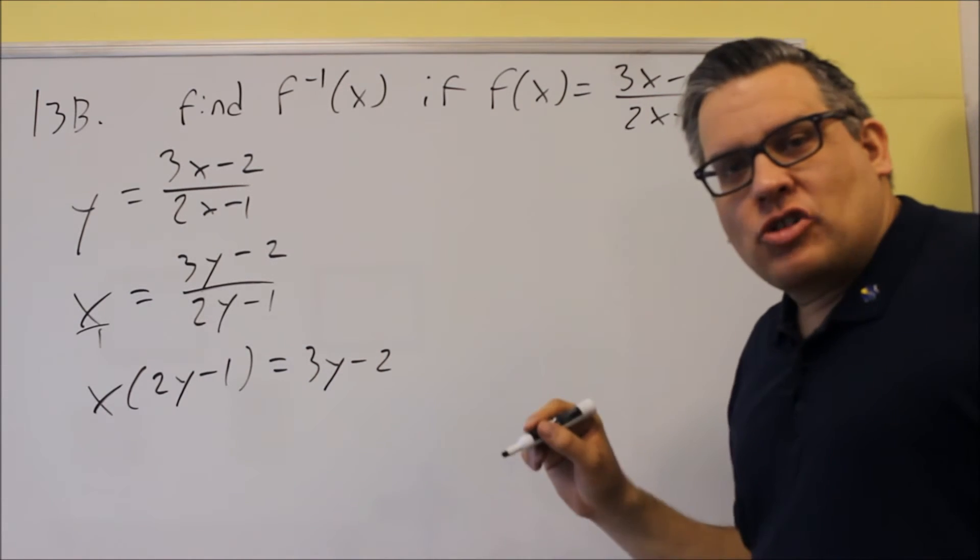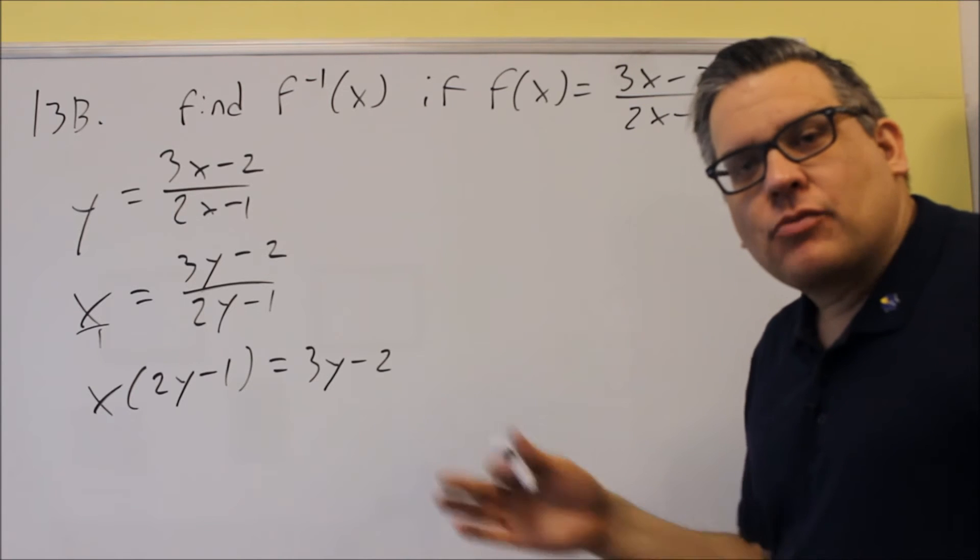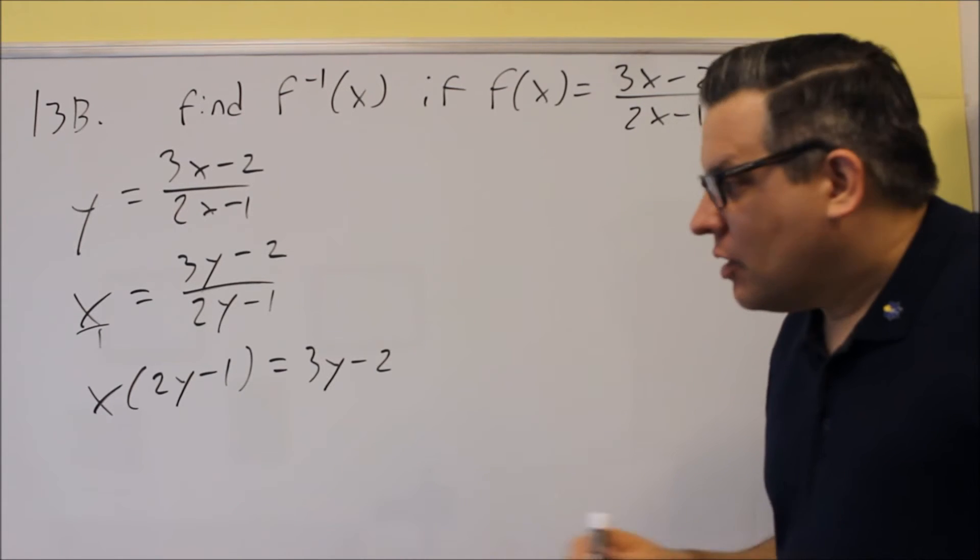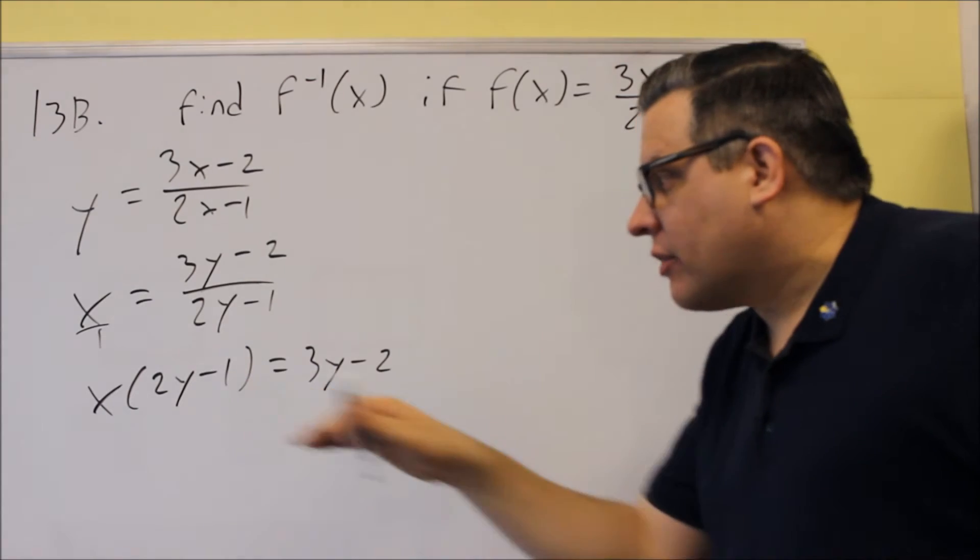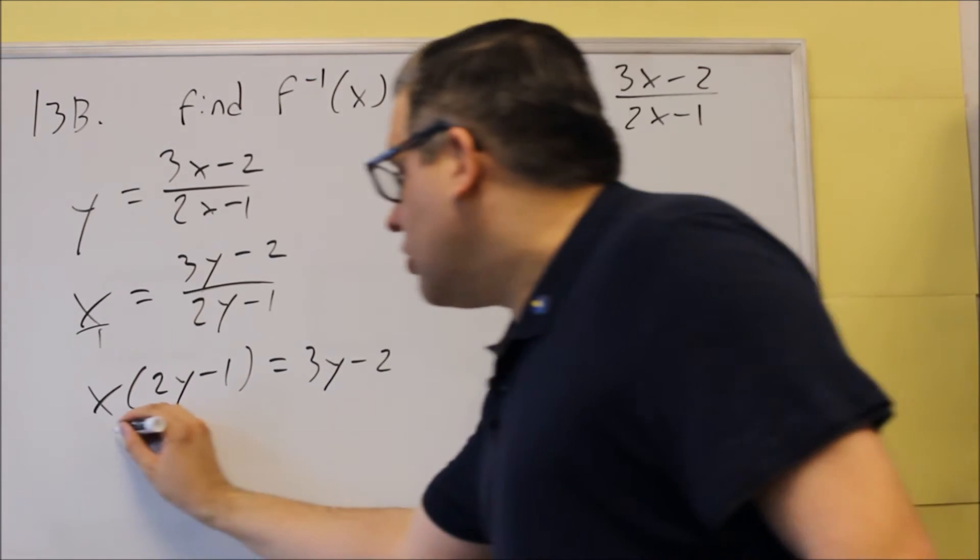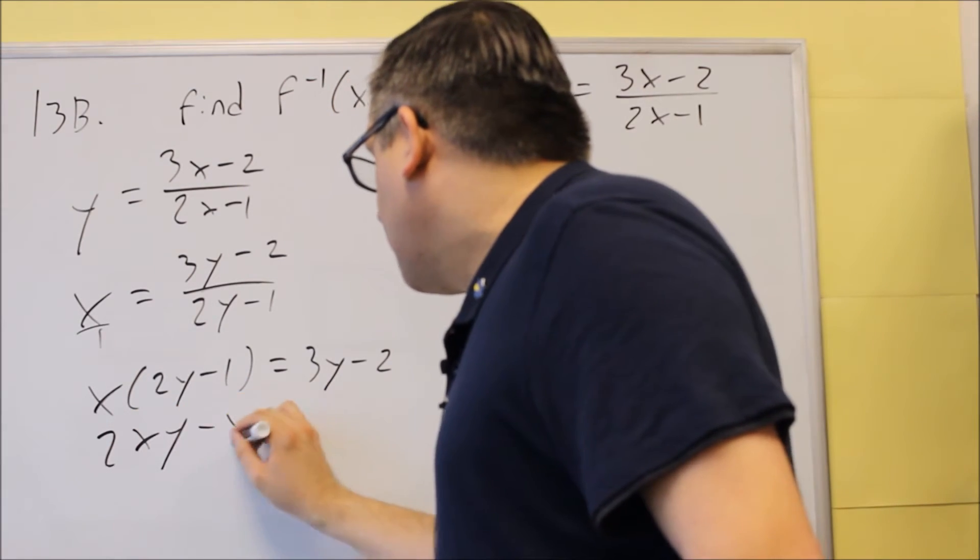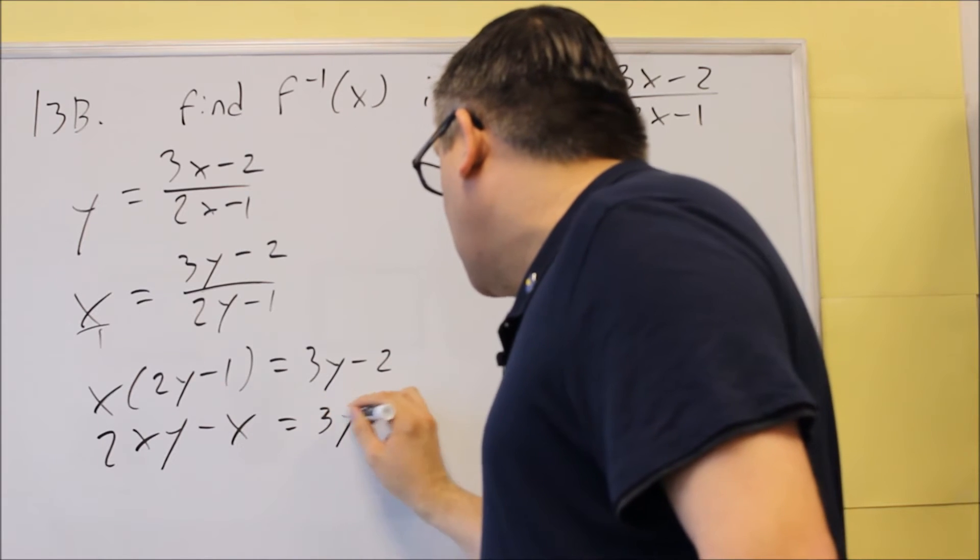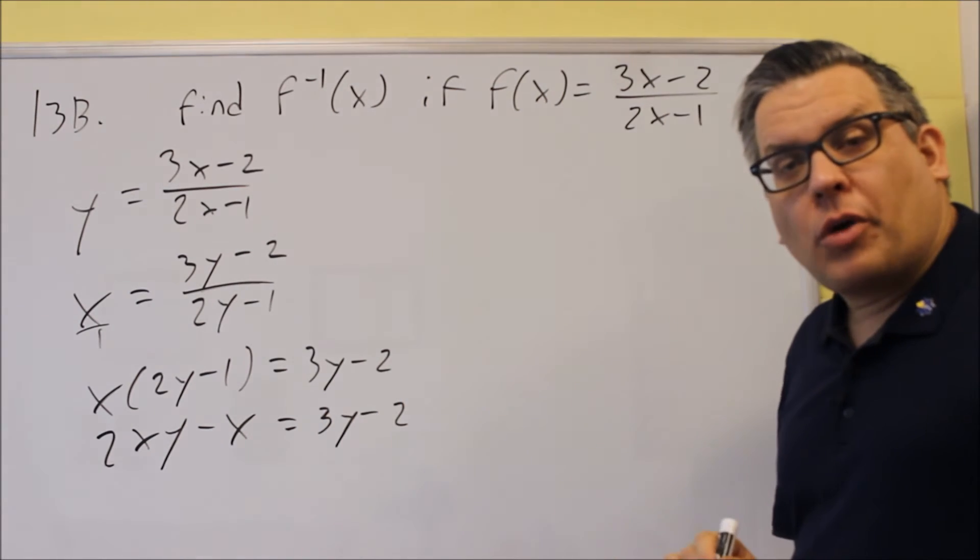Now the idea is you want to get all the y's to one side of the equation. So the first thing I would have to do here is clear out the parentheses. So I'm going to do 2xy minus x, and then I have 3y minus 2.